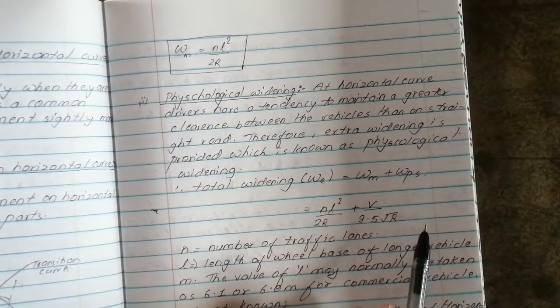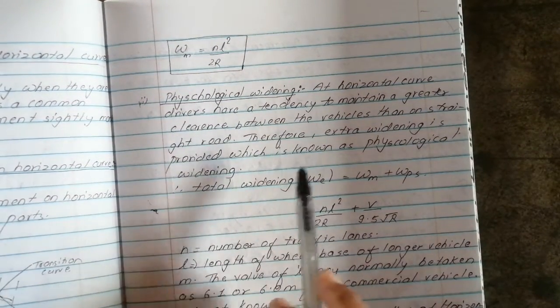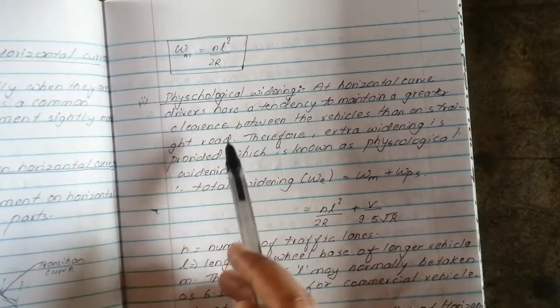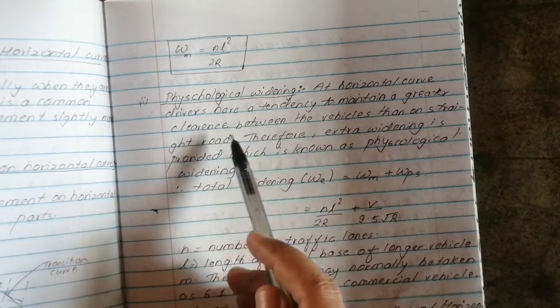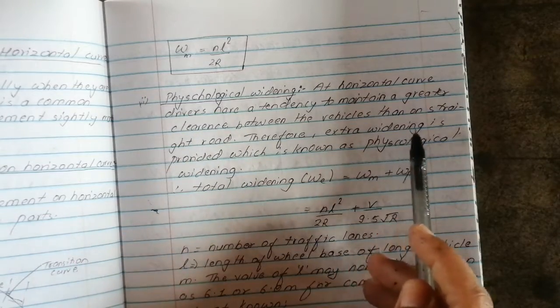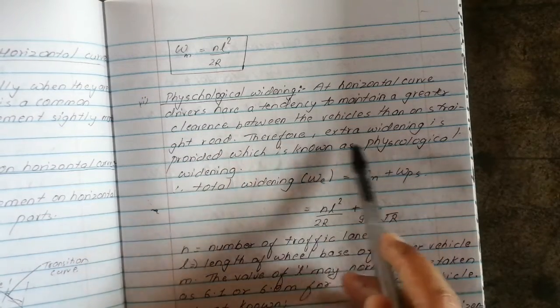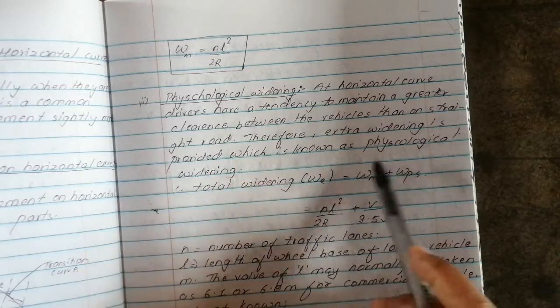WM is equal to NL square by 2R. Psychological widening on horizontal curve: drivers have a tendency to maintain a greater clearance between the vehicles than on straight road. Therefore extra widening is provided which is known as psychological widening.